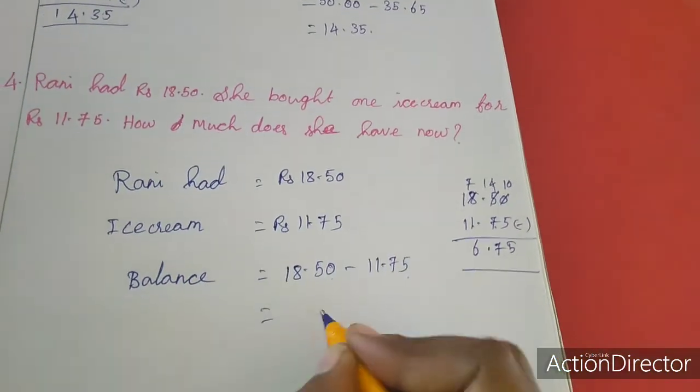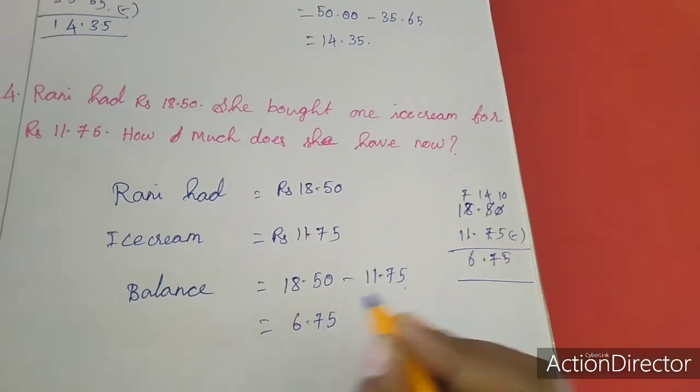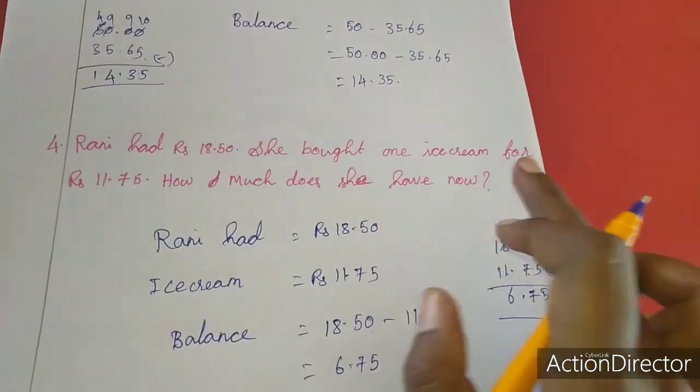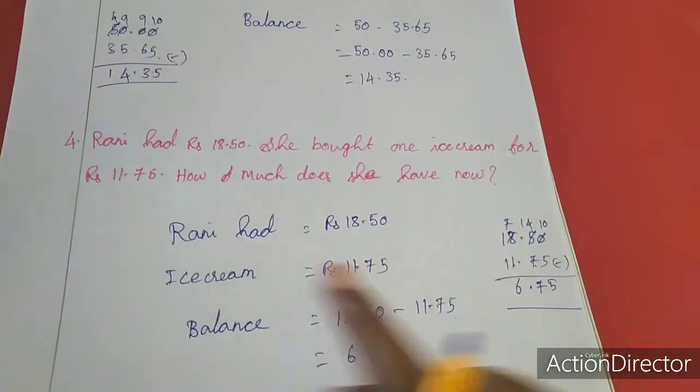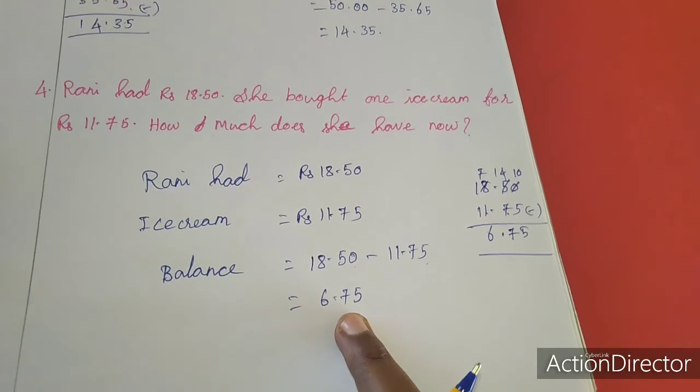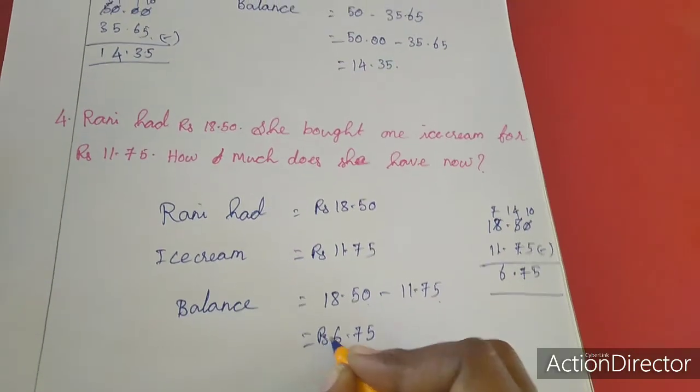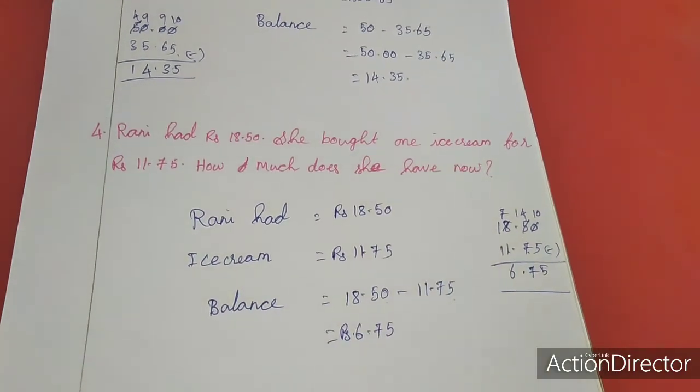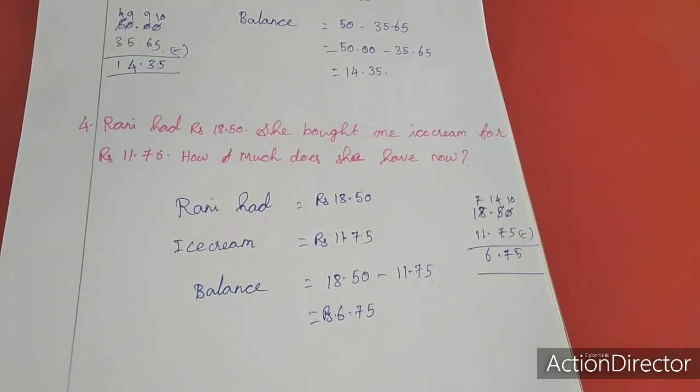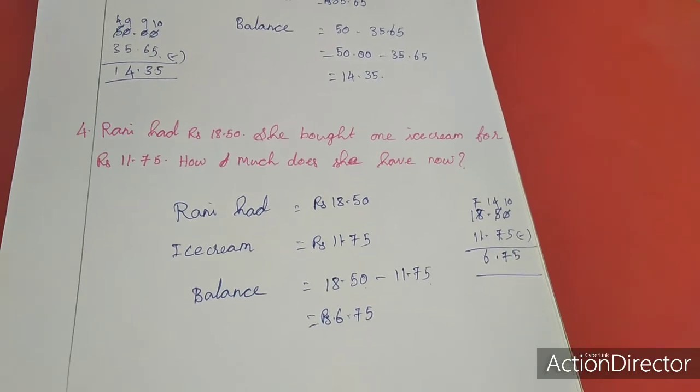So the value is 6.75. After shop, after getting, after bought the ice cream, Rani had 6.75 rupees with her. So this is the answer for fourth sum. Up to this the class is over. In next class we will move to the next sum. Thank you, DS. Copy this in your note as well as do the homework.